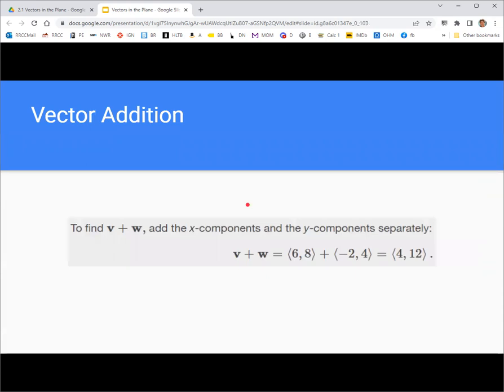If you're actually working with component forms of the vectors, you just add the components separately. So adding the first components here, 6 and negative 2 is 4. And adding the second components, 8 and 4, it's 12.